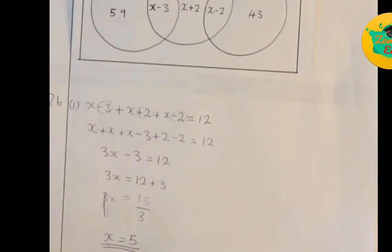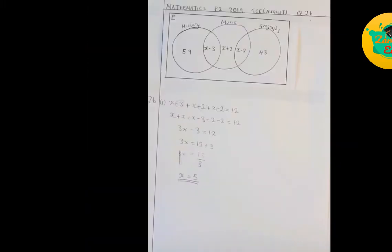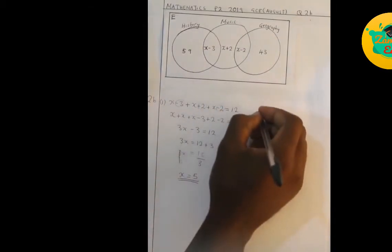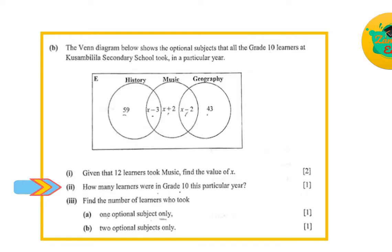If you do that, you get the full marks. We go to our part B question, which says: how many learners were in Grade 10 this particular year?